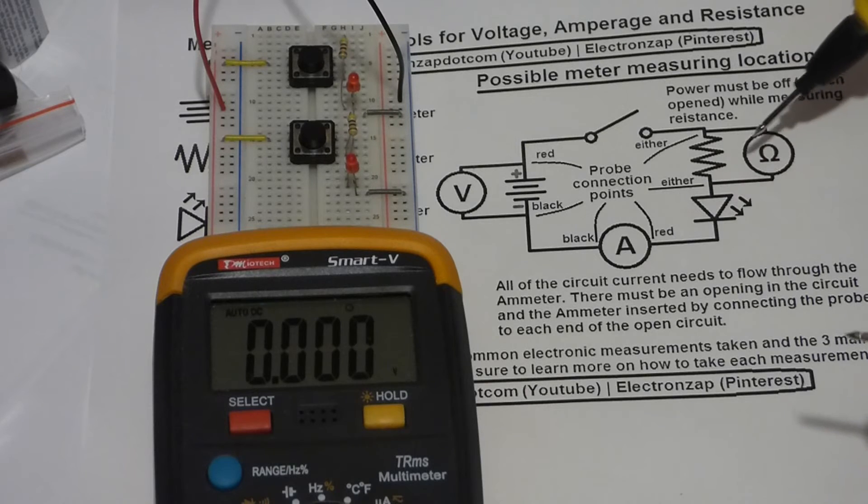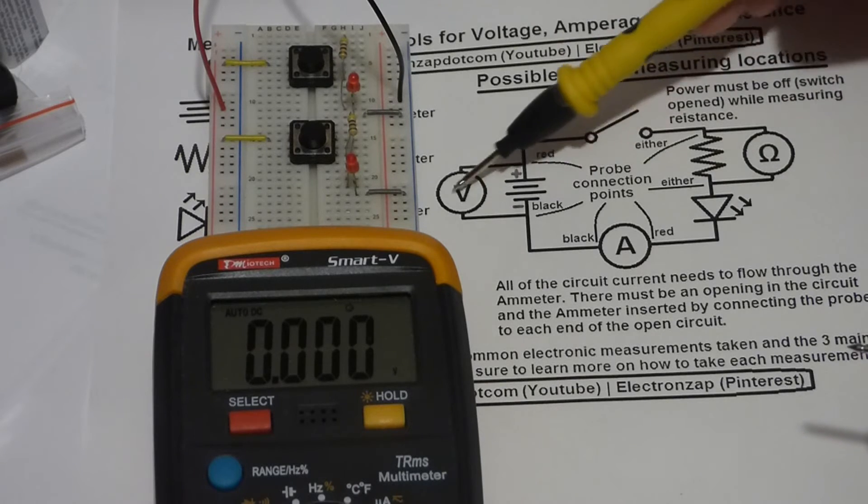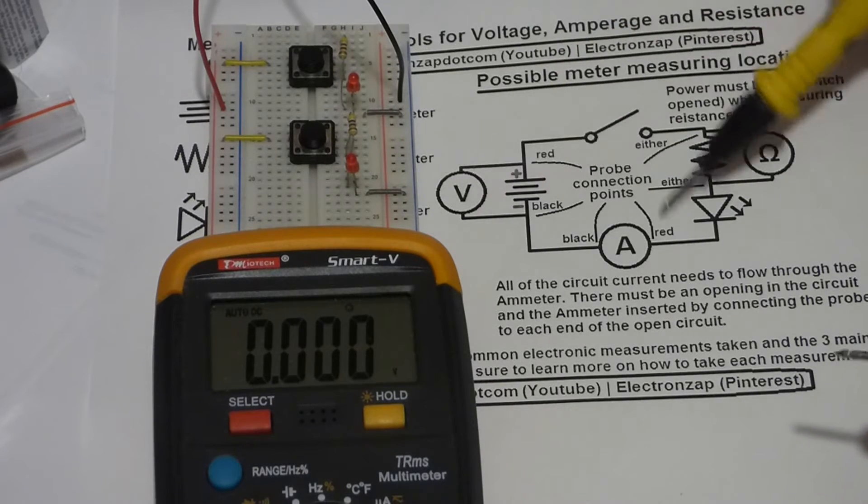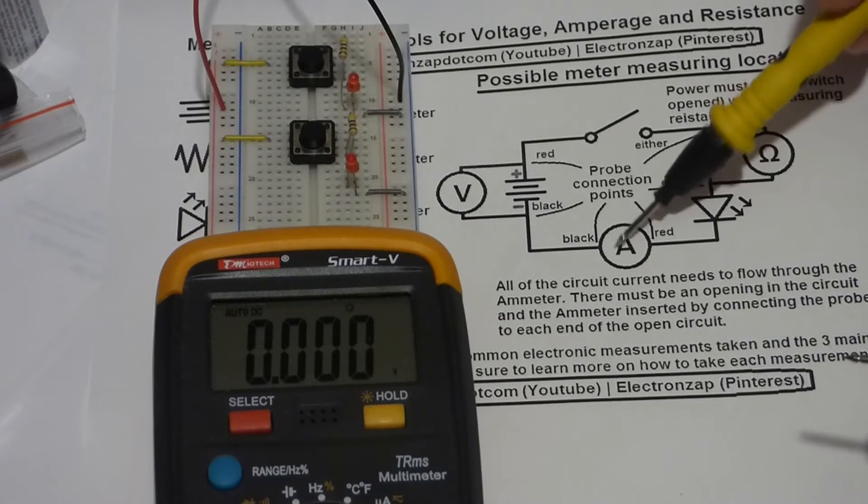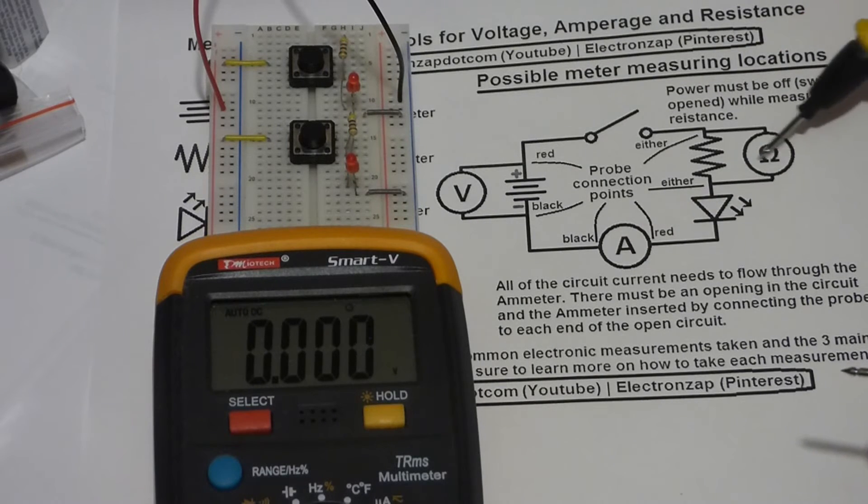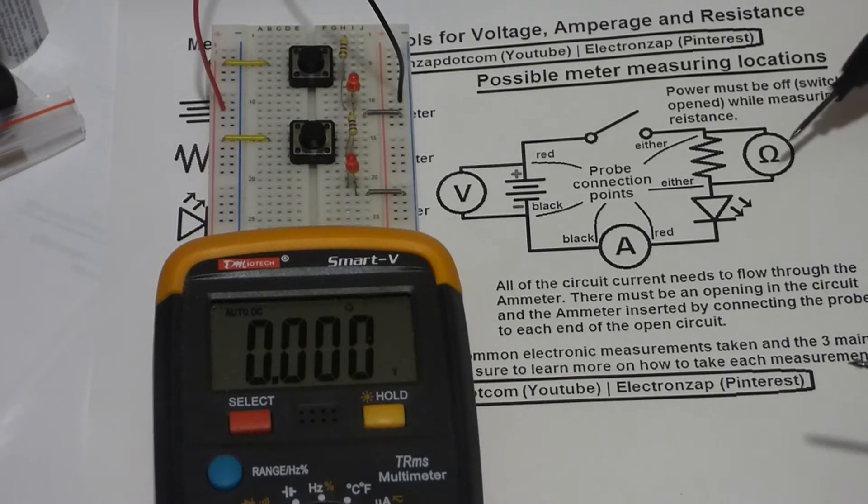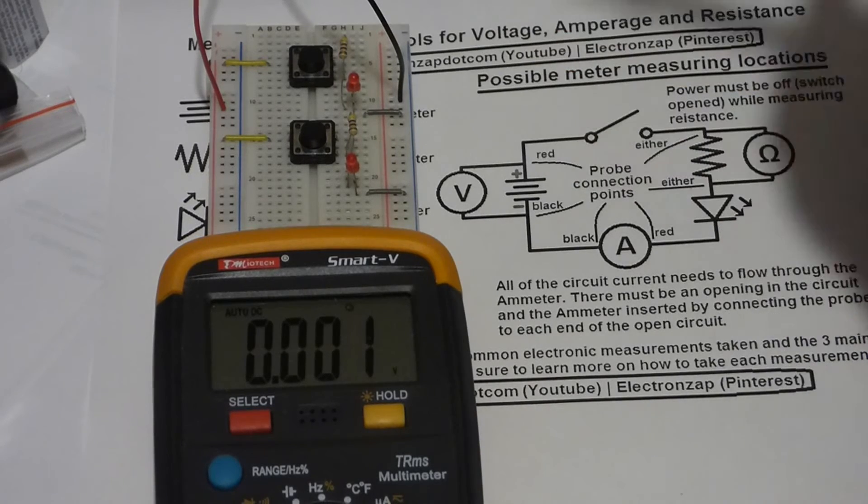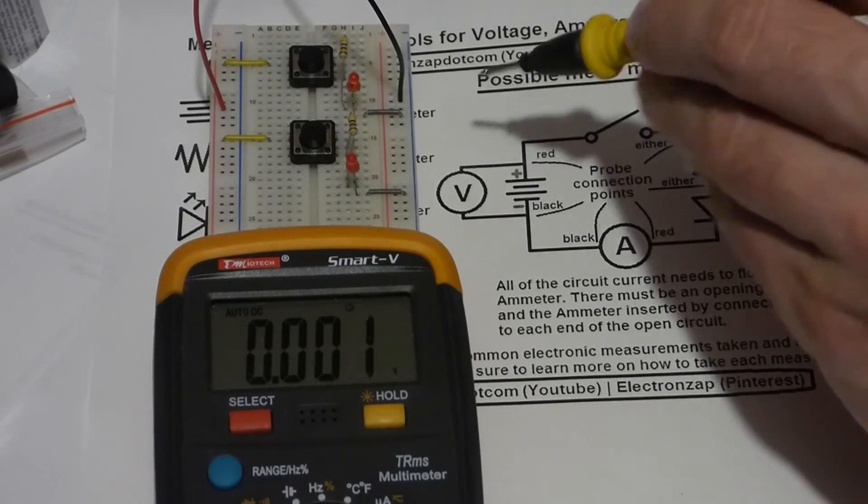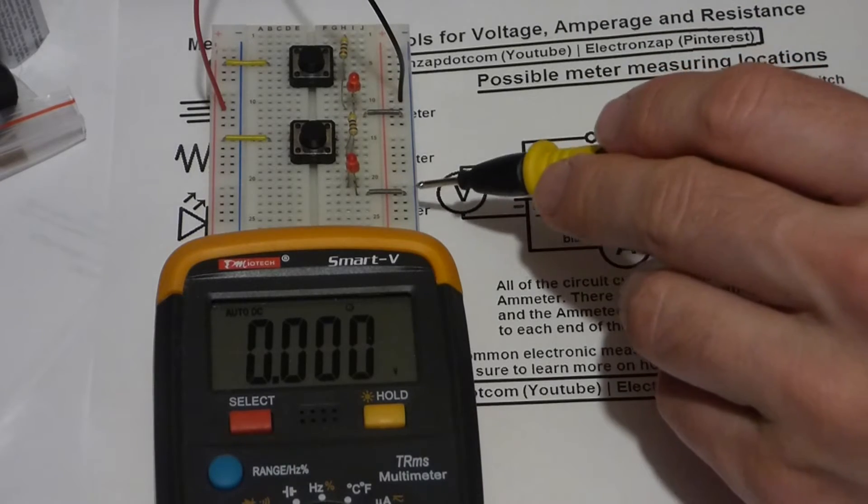I'll show you that later, but here I have a schematic. This is the symbol for the voltmeter. This is a symbol for an ammeter—I'll go over that in another video. And here's a symbol for the ohmmeter to measure resistance. Again, that's another video.